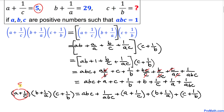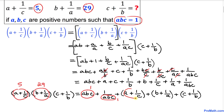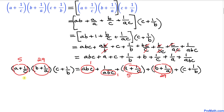Now we substitute the known values. a plus 1 over c equals 5, so we replace that with 5. b plus 1 over a equals 29, so we replace that with 29. Since abc equals 1, we replace abc with 1 and 1 over abc with 1 as well. So the left-hand side becomes 5 times 29 times (c plus 1 over b).